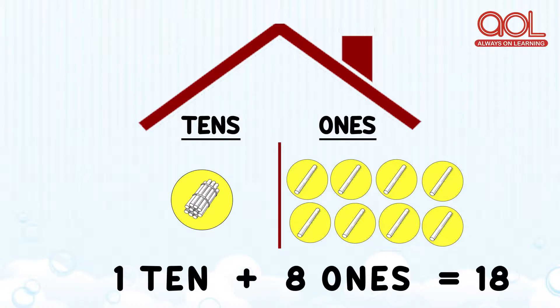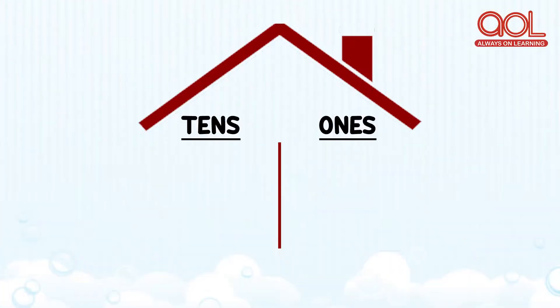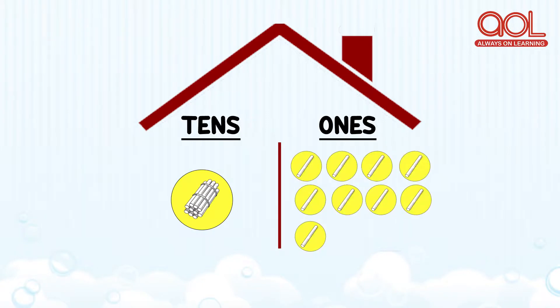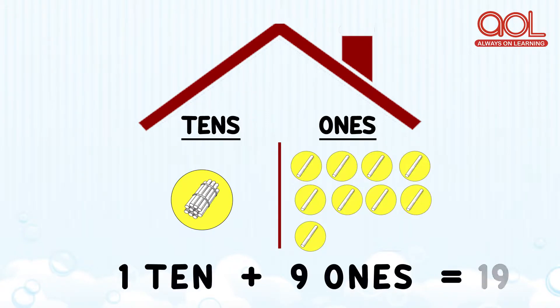Let's go further and see the next number. We have one ten and nine ones. One ten and nine ones makes number nineteen.